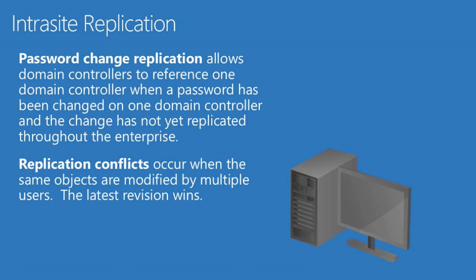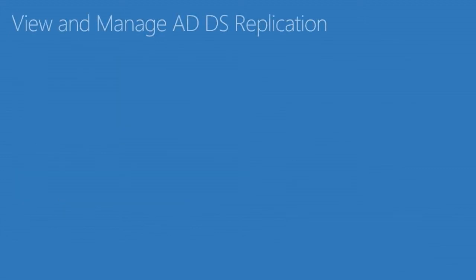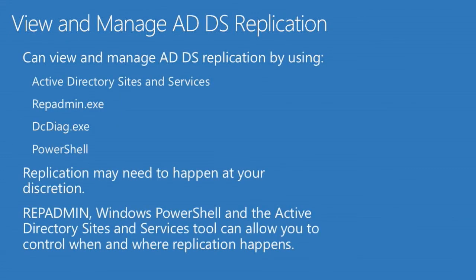There may be times when you think your replication is having a problem and you say, wait a minute, I don't know if my replication is happening properly between my servers. There are some tools that you can use. The main tool that we use for replication is a tool called RepAdmin. You have other ones, DCDiag, that's Domain Controller Diagnostics. You can use PowerShell commands. But RepAdmin is the number one tool that most of us use.